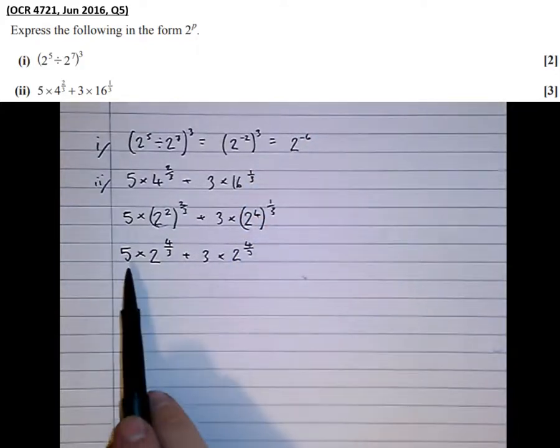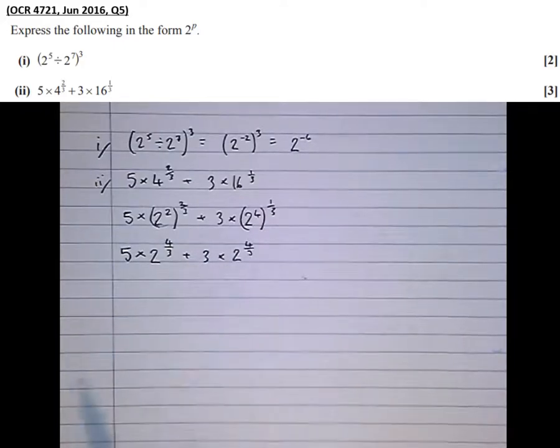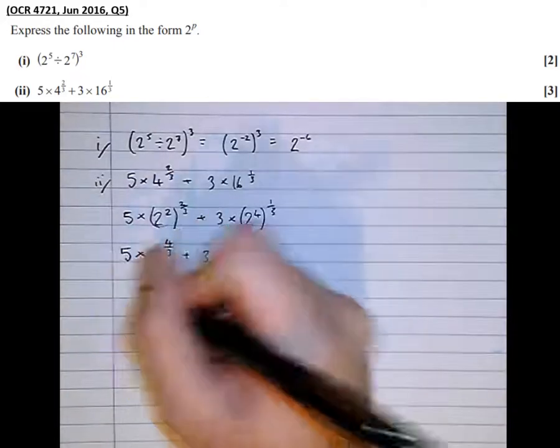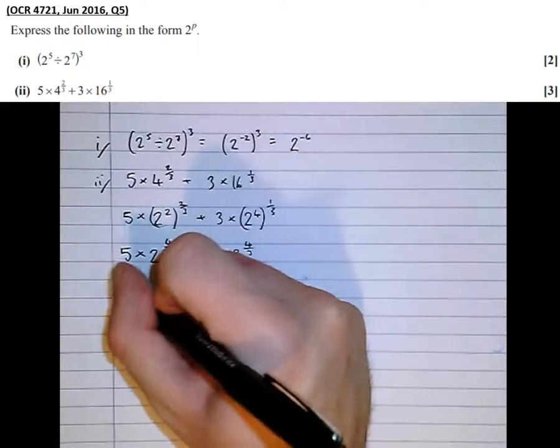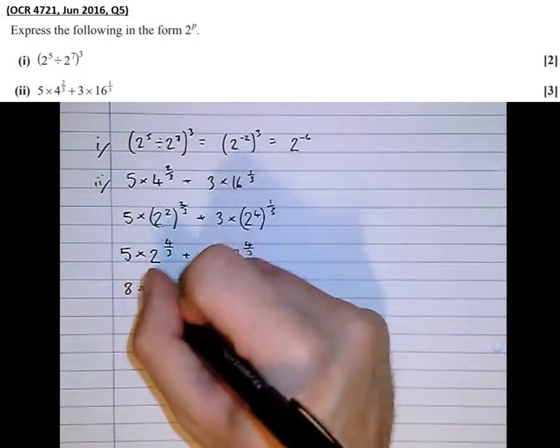And notice we've got 5 of these 2 to the 4 thirds here, and we're adding 3 of the 2 to the 4 thirds. That becomes 8 times 2 to the 4 thirds.